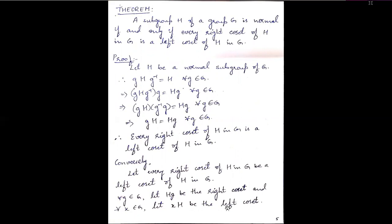Next, we go to the third theorem: a subgroup H of a group G is normal if and only if every right coset of H in G is a left coset of H in G. Since we have an if-and-only-if condition, I take the first statement. Let H be a normal subgroup of G. From the previous theorem, gHg⁻¹ equals H for every g belonging to G. Multiplying g on the right side, gHg⁻¹g equals Hg, which simplifies to gH equals Hg for all g belonging to G. So every right coset of H in G is a left coset of H in G.